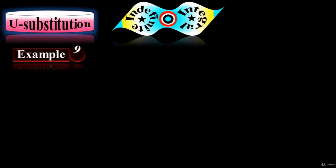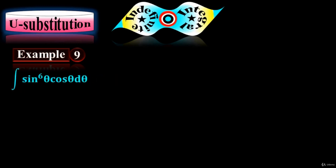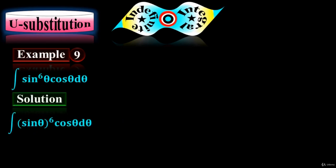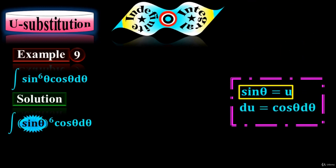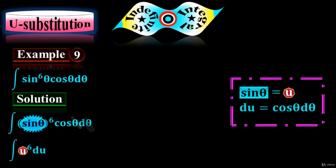Example number 9. Find the integral of sin⁶(θ) times cos(θ) dθ. Pull the power of sin(θ). Let's suppose sin(θ) equals u, and take the derivative on both sides. We get du equals cos(θ) dθ. So replace sin(θ) by u and cos(θ) dθ by du.